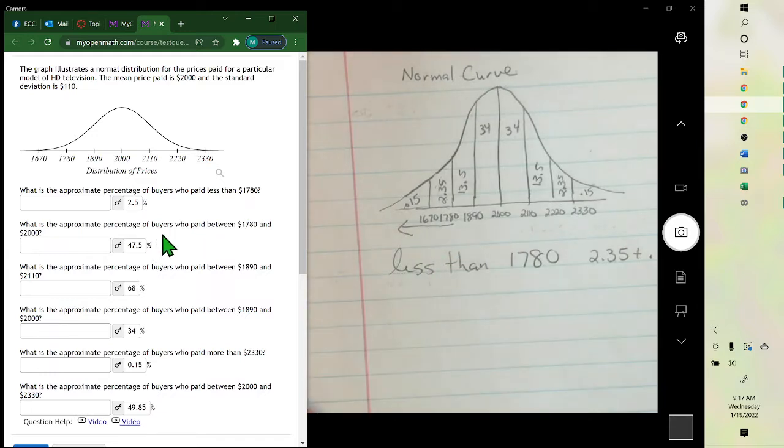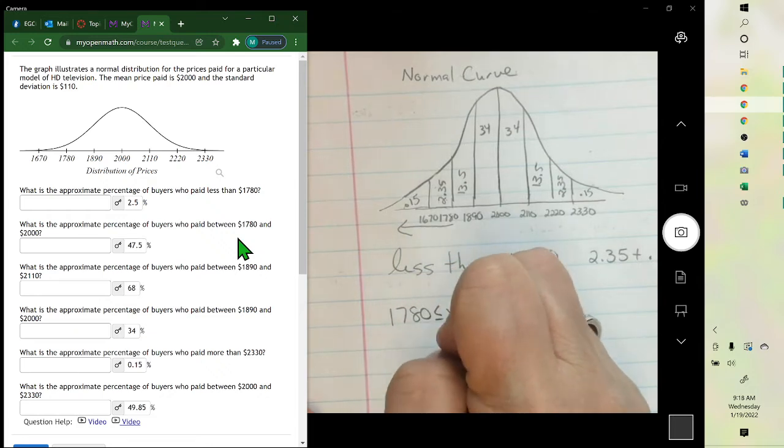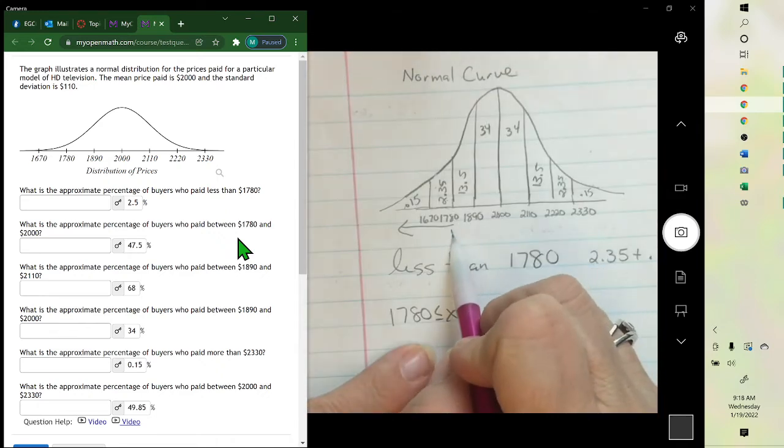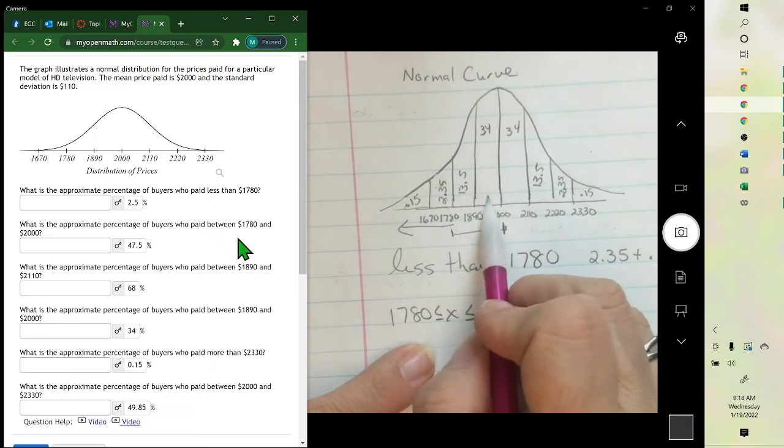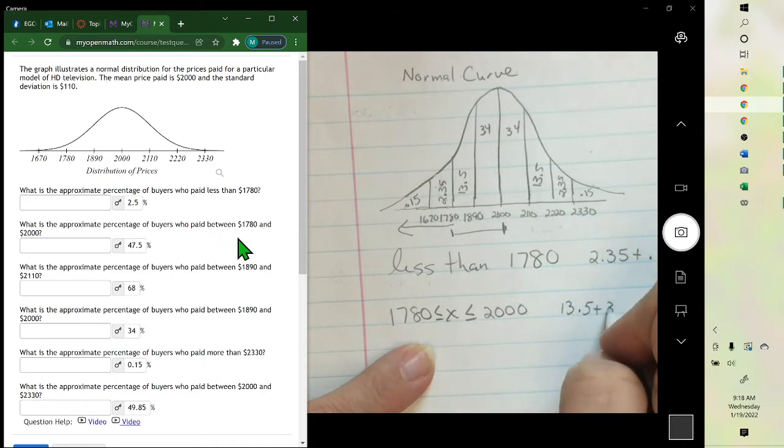What is the approximate between $1780 and $2,000? $1780 to $2,000 is here. So it would be these two. 13.5% plus 34% is 47.5%.